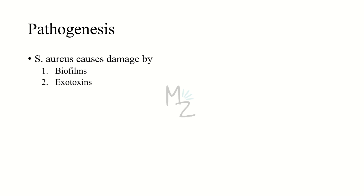A biofilm is an aggregate of microorganisms in which cells adhere to each other on a surface. There are certain developmental stages of a biofilm: initial attachment, irreversible attachment, maturation one, maturation two, and dispersion. Some bacteria release endotoxins, but S. aureus releases exotoxins.